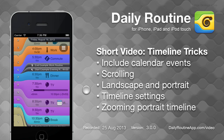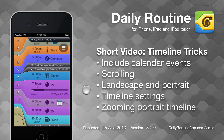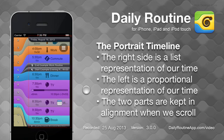Daily Routine for iOS centers around the timeline, a continuous representation of the time slots, and optionally the calendar events, which make up our time. The right hand side of the timeline is a list representation of our time, while the left is a proportional representation.